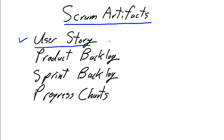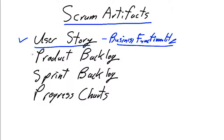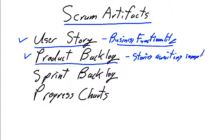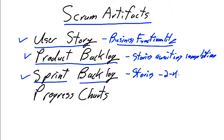The key artifact is the user story, which identifies the business functionality to be delivered by the project. The user stories are combined into what we call the product backlog, which are the stories awaiting completion. As we move forward in the Scrum process, stories are removed from the product backlog and moved into a very specific sprint backlog, which identifies the stories to be completed in the next sprint — a defined two to four week development cycle.